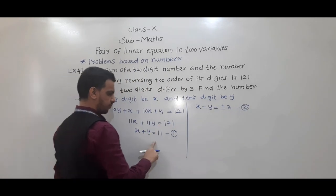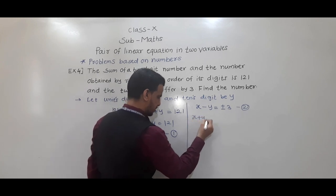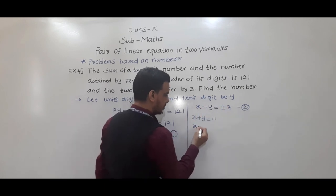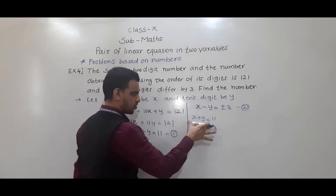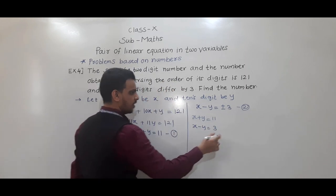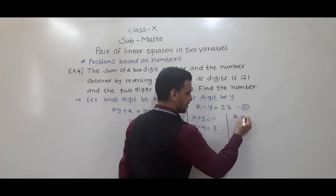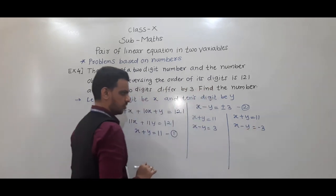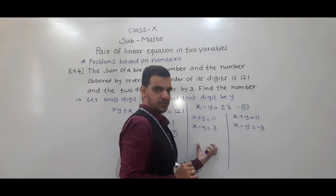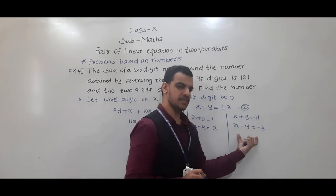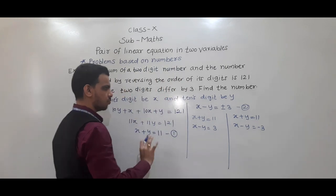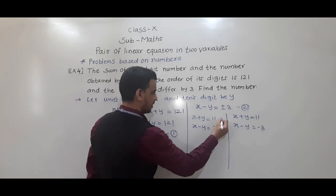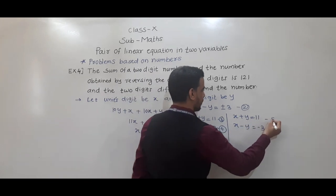So we solve two sets of equations. Set one: x plus y equals 11 and x minus y equals plus 3 (equations 3 and 4). Set two: x plus y equals 11 and x minus y equals minus 3 (equations 5 and 6). Adding equations 3 and 4: 2x equals 14, so x equals 7, and substituting gives y equals 4.